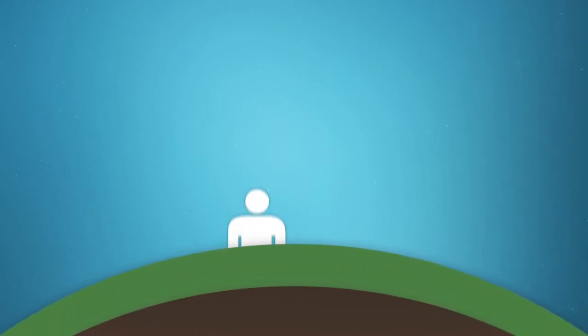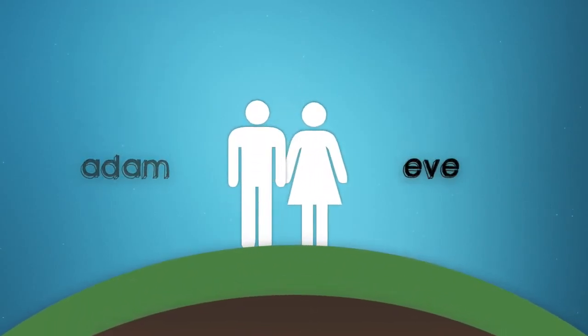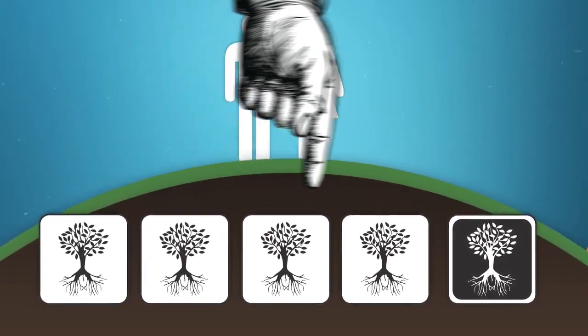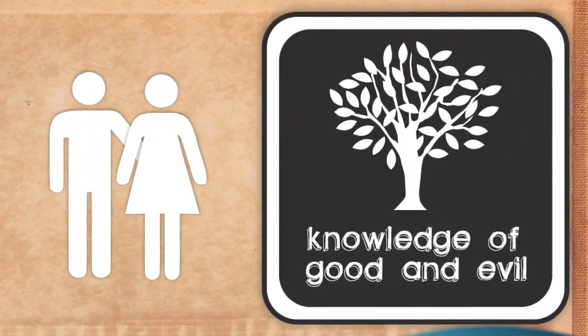On Earth, God creates two people, a man and a woman, named Adam and Eve. They are to tend the garden in which they live, and they are free to eat from any tree except the tree of knowledge of good and evil.